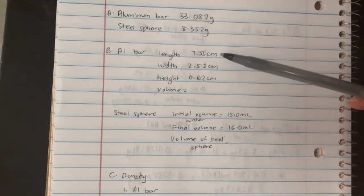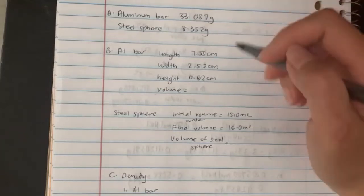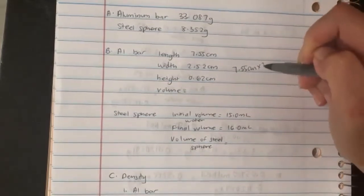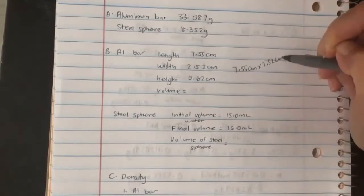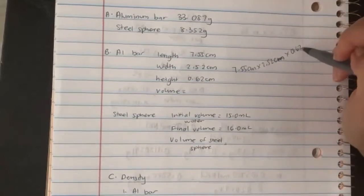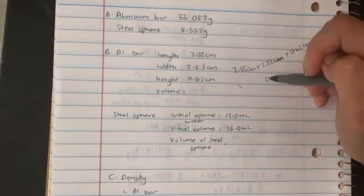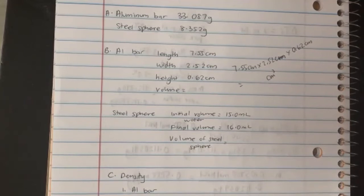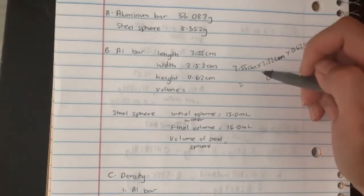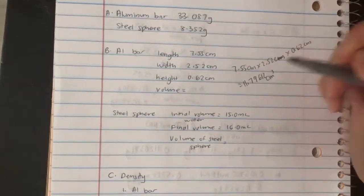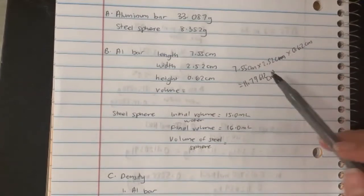Rulers will give you two decimal places in centimeters. To get the volume, you take these three values multiplied together. So if you take 7.55 centimeters times 2.52 centimeters times 0.62 centimeters, we get a unit of centimeters cubed. Putting this in our calculator: 7.55 times 2.52 times 0.62, you'll get 11.79612.